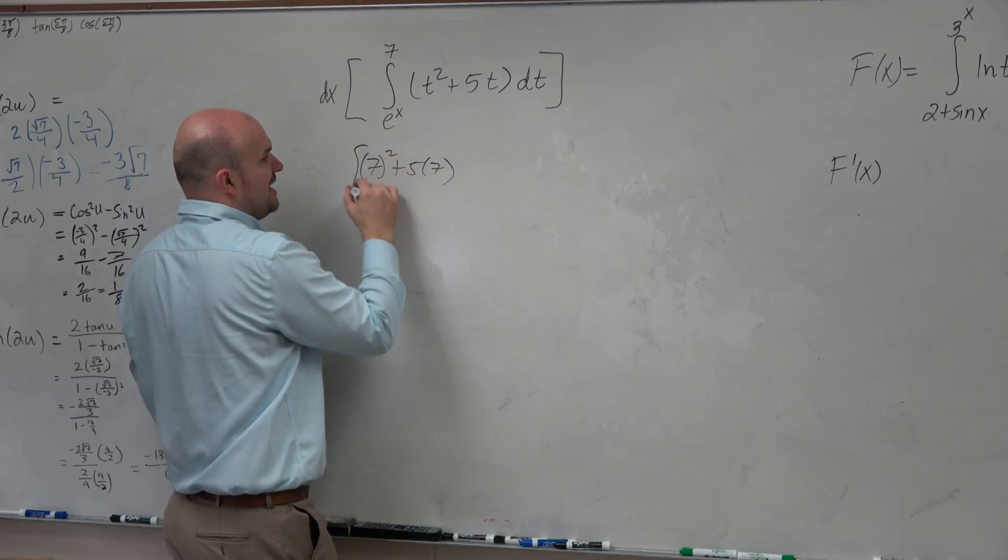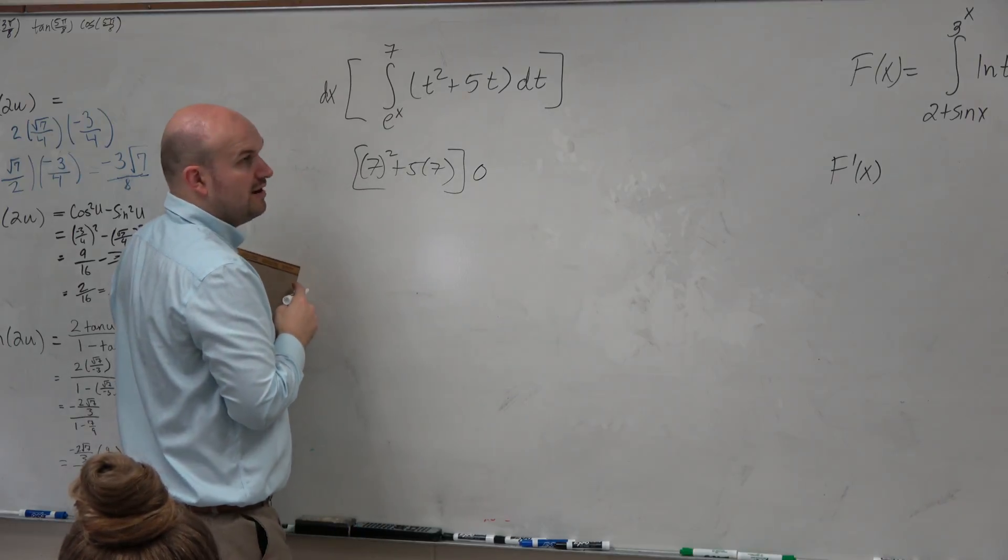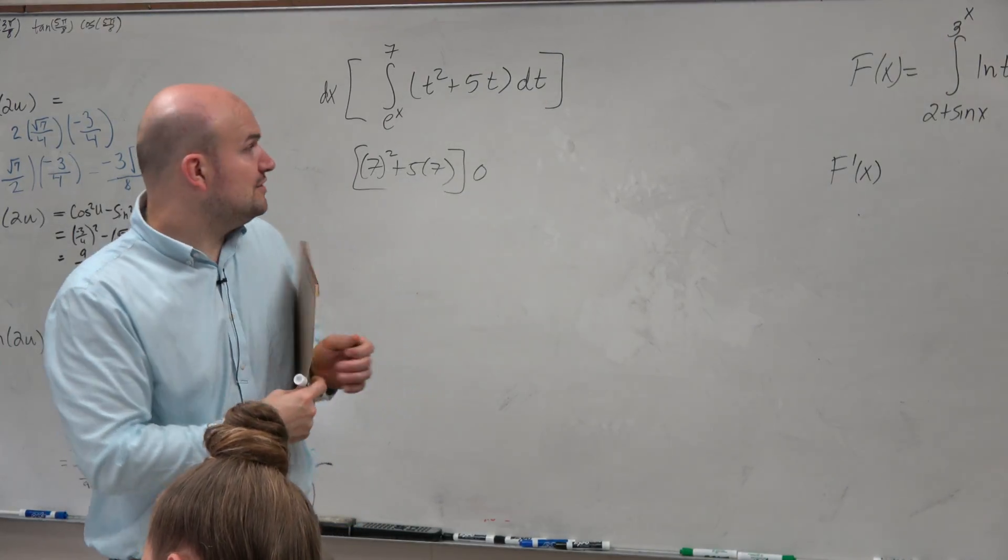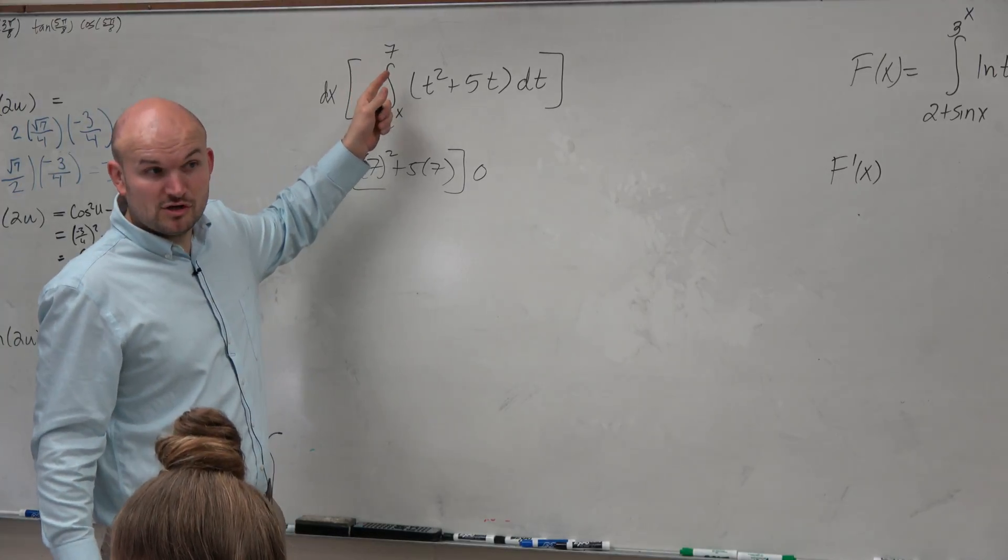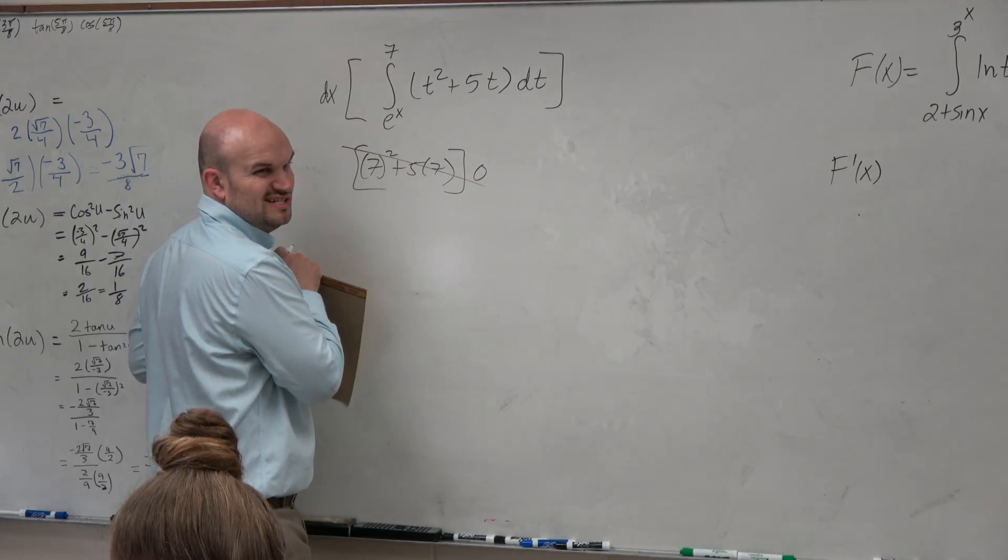And then multiply that times the derivative. Oh, derivative of 7 is just 0, right? So that's kind of helpful, because when you're doing this, whenever you have a constant as one of your functions, you know that's just going to go to 0.